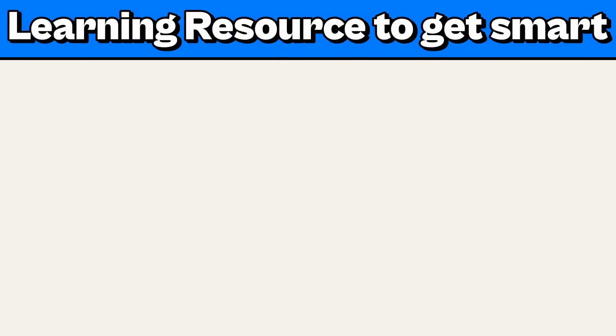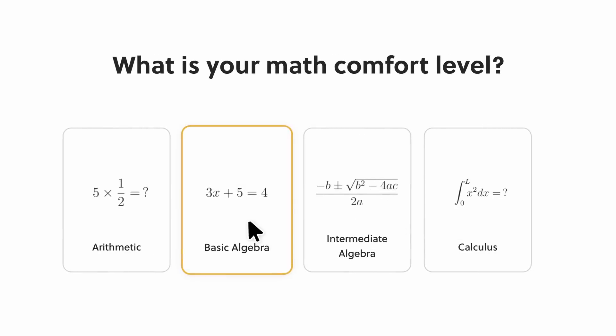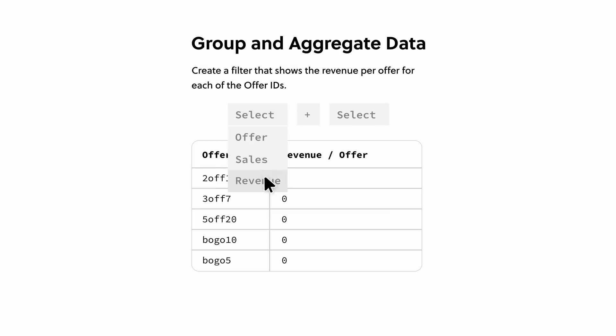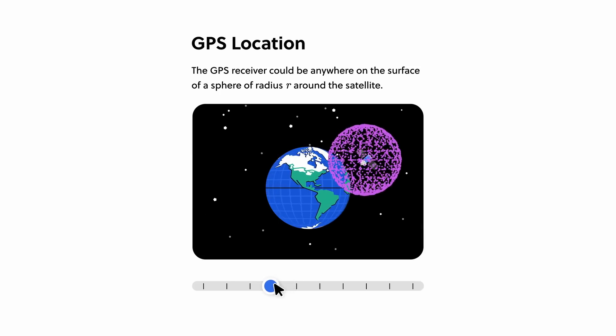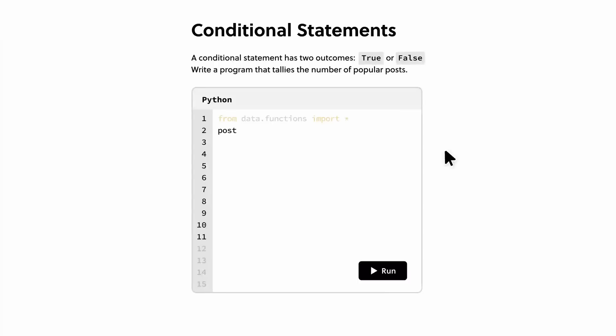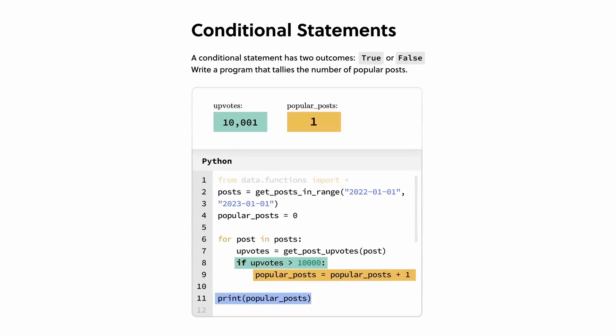Brilliant is a learning platform where you learn by doing. They offer thousands of interactive lessons in math, data analysis, programming, and AI, so there has to be something for you. Brilliant is designed to be effective. Each lesson is filled with hands-on problem solving that lets you play with concepts, and it's a method that's proven to be six times more effective than watching lecture videos.